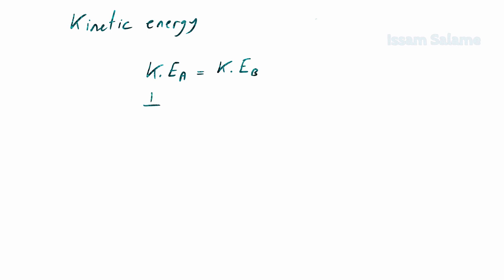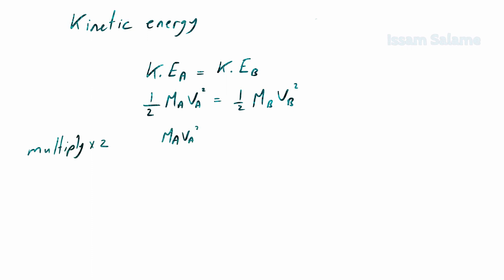Since the formula for kinetic energy is ½mv², for gases A and B to have the same kinetic energy: ½ × molar mass of gas A × (speed of A)² = ½ × molar mass of gas B × (speed of B)². Multiplying both sides by 2 gives: M_A × V_A² = M_B × V_B².